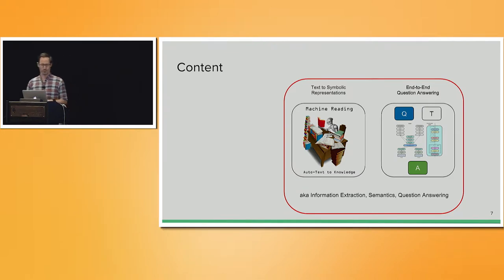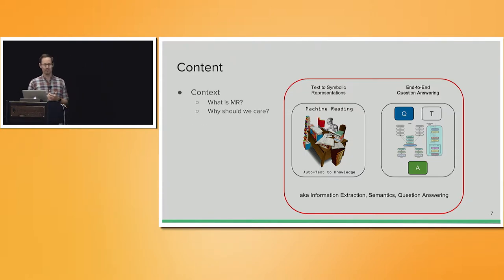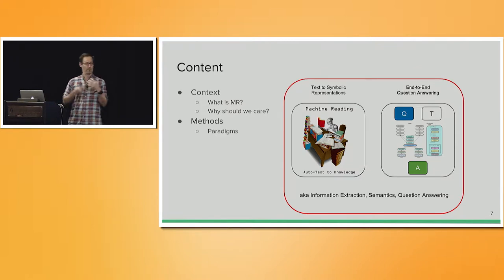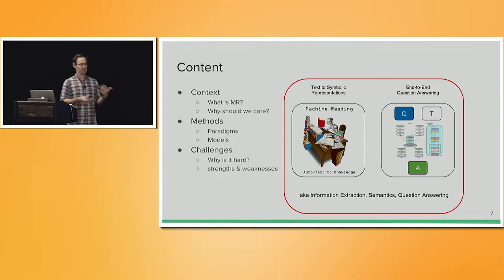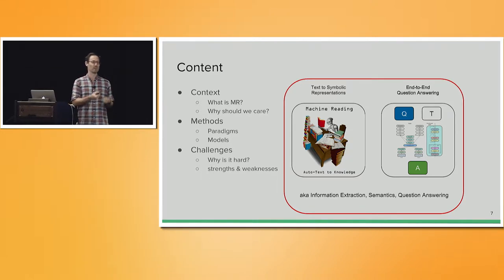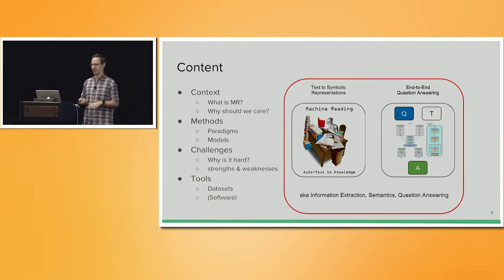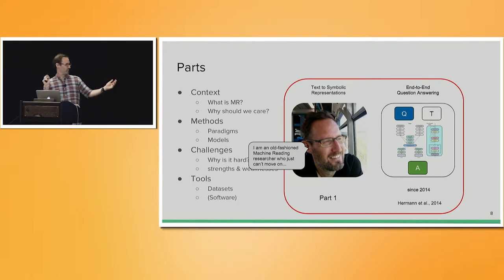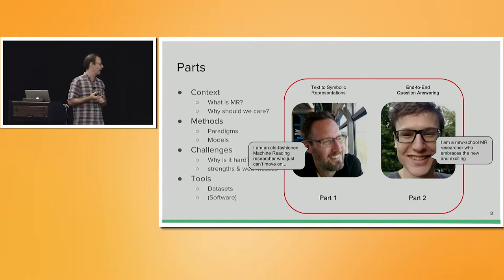As for the content of this tutorial, what we try to do is give you some context in terms of what machine reading is and why we should care about it, talk about basic methods and the paradigms of machine reading, and the models we use to produce these kind of representations. We'll talk a lot about challenges — why it's hard, and what the strengths and weaknesses of current models are. We also briefly touch on datasets and software. Chronologically, part one is where I'll talk about text to symbolic representations, and part two is where Johannes will talk about end-to-end question answering.